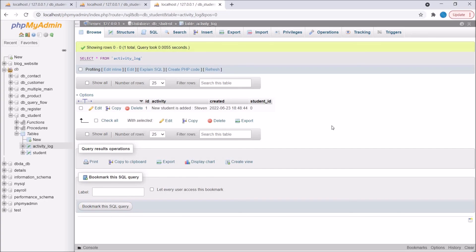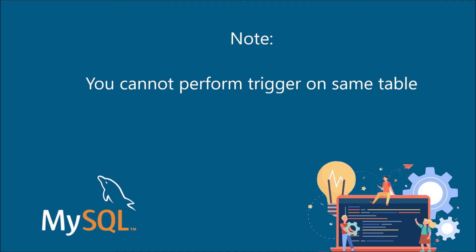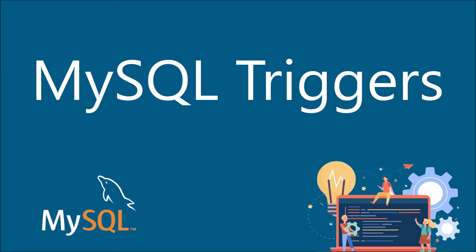So I have shown you three examples in this video. You can have more types — like before insert, after insert, before update, after update, before delete, and after delete. These six types of triggers you can create in MySQL. One thing to keep in mind: you should not use the same table inside your trigger definition as the one already used while creating the trigger. That's all in this video. If you have any doubt related to this topic, please comment down below. Thank you so much for watching. Please like, share, and subscribe to my channel.